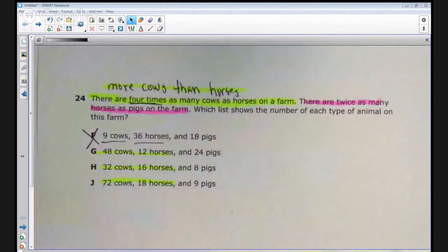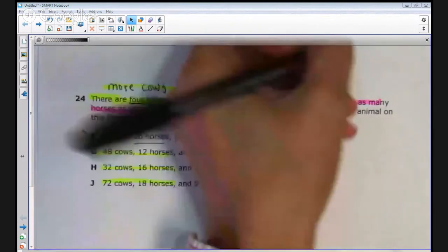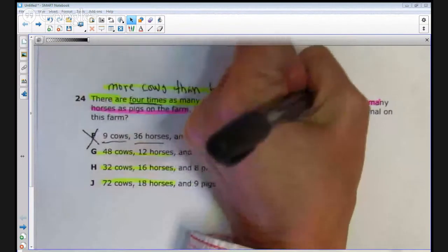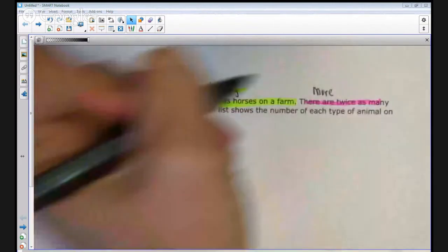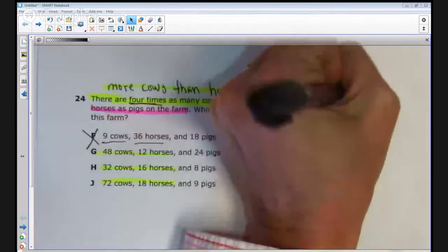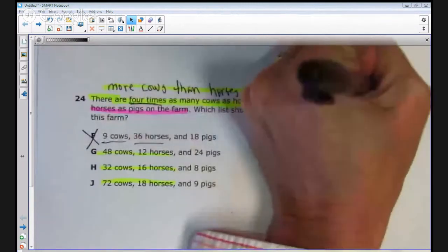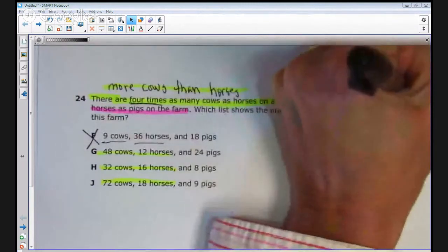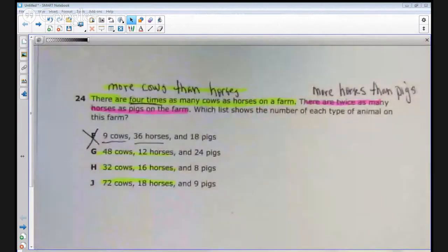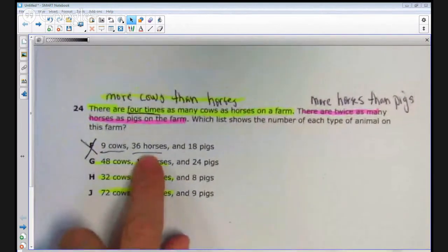Well, yes, if there's twice as many horses as pigs, there's more horses than pigs. More horses, less pigs. So if there's more horses than pigs, let's take a look at each of the answer choices. More horses than pigs.